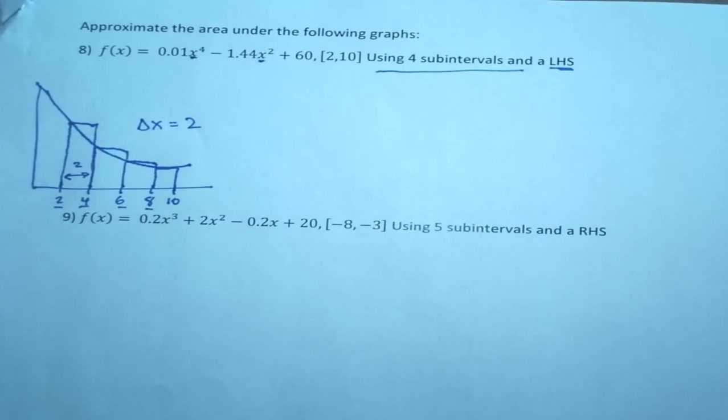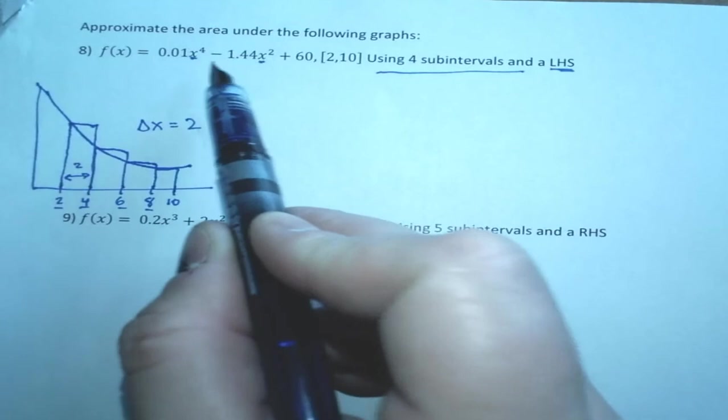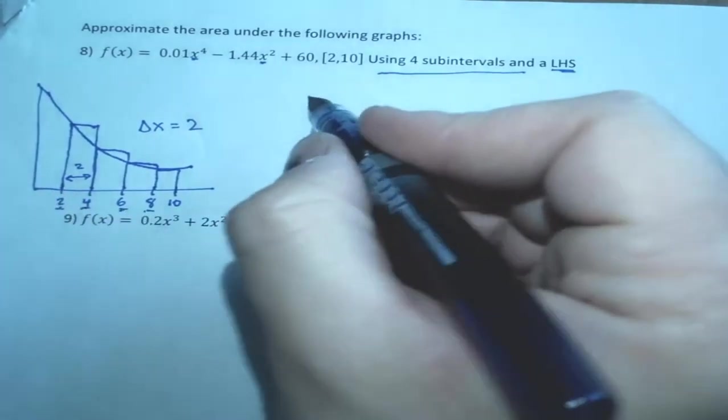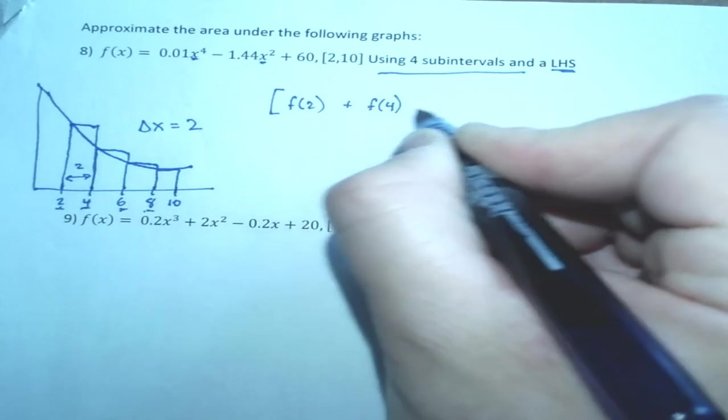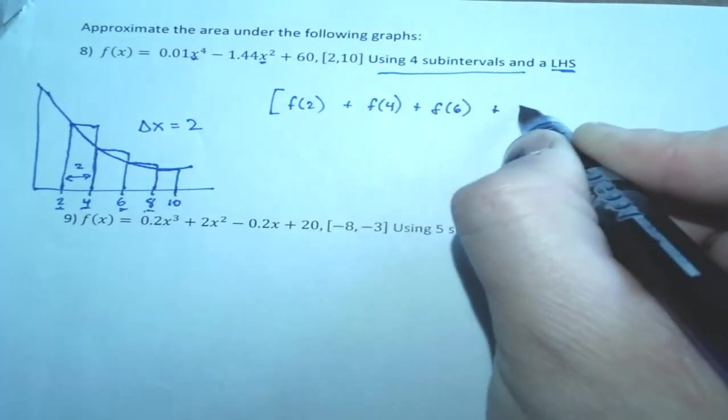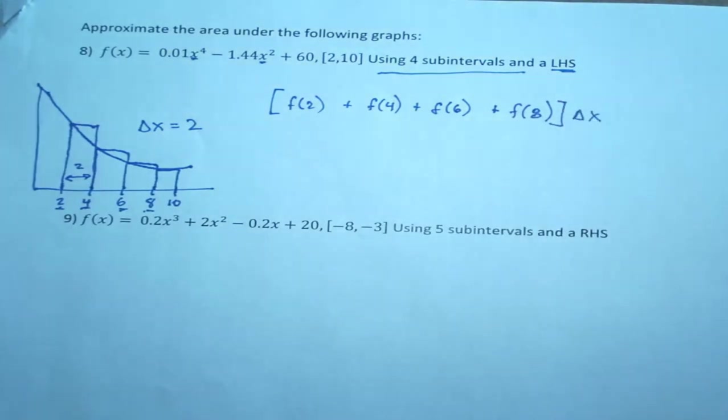So let's go ahead and get started. I'm going to take my function, 0.01x to the 4th minus 1.44x squared, and then plus 60. So I've got my function down pretty well, pretty comfortable with that. And what do we know? We know that this function, we're going to have to plug in 2, 4, 6, and 8. So we're going to have f of 2 plus f of 4 plus f of 6 plus f of 8 times delta x.